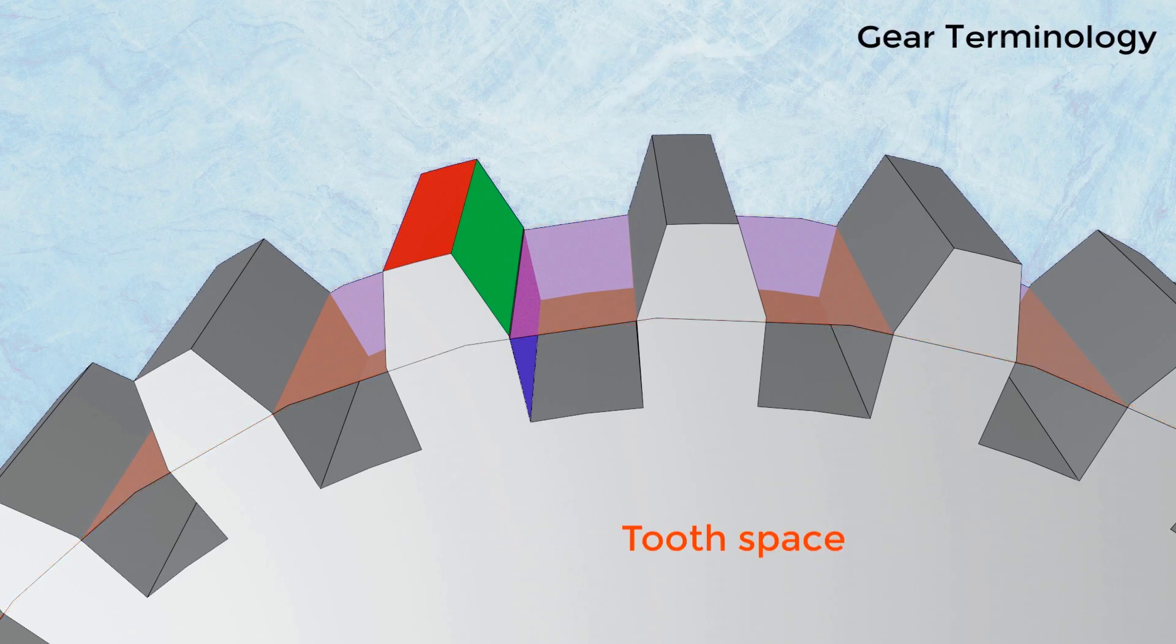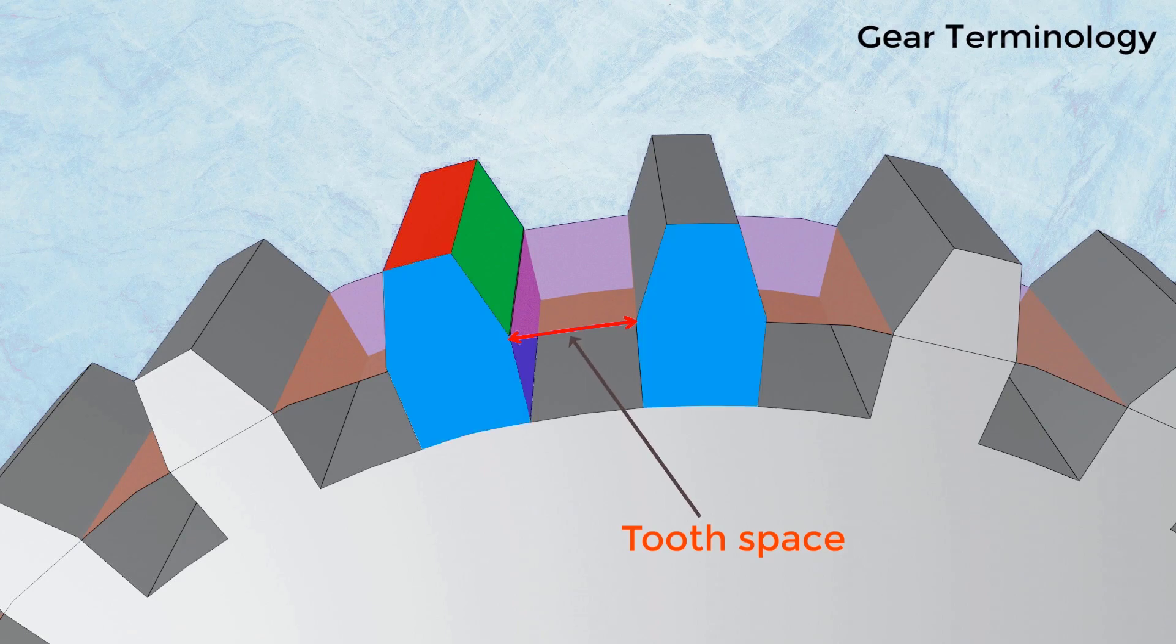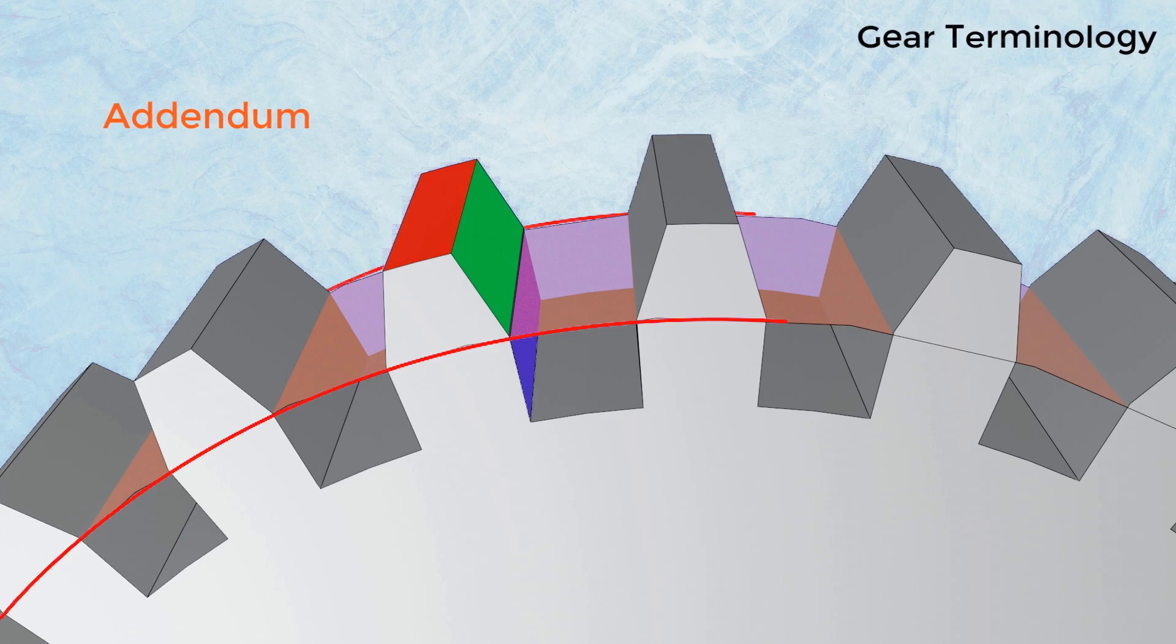Tooth Space: Tooth space is the width of space between two adjacent teeth measured along the pitch circle. Addendum: Distance between the pitch circle to the top of the tooth in the radial direction is called an addendum.